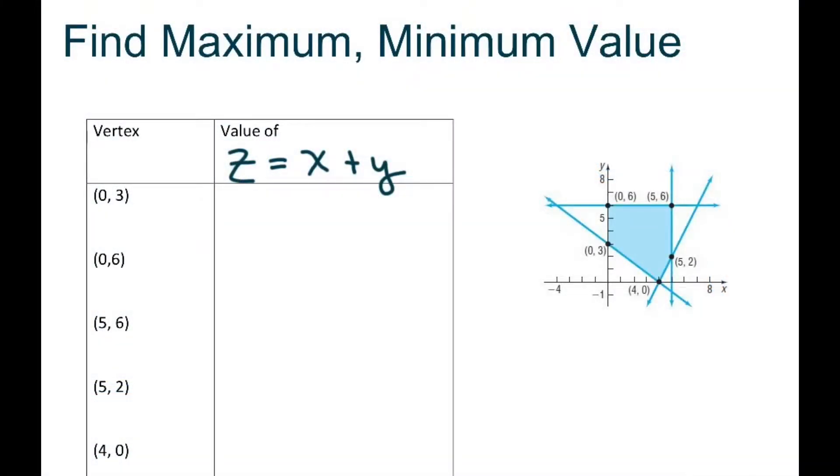Hi everyone, we're going to find the maximum and minimum value for this objective function. So this is your objective function right here, and we have a figure that illustrates the reasonable points, which are also your corner points.